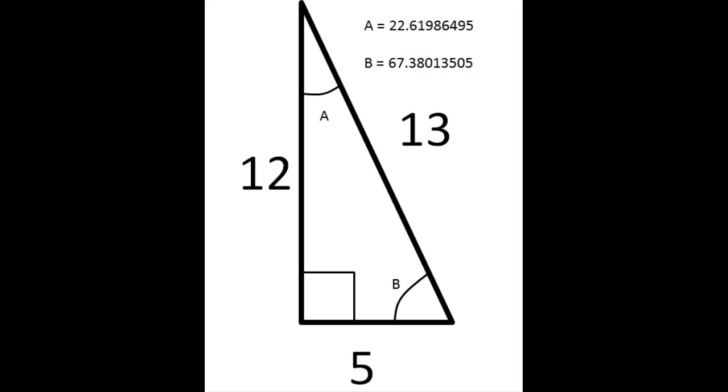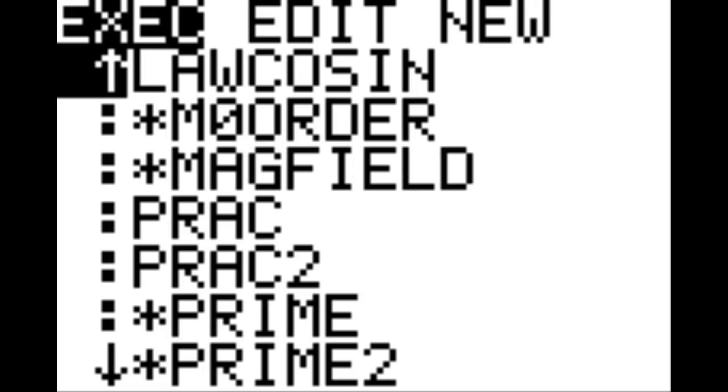Now that we're done writing this program, we can test it with a real triangle to see if it holds up. We're going to be using the triangle depicted below, which has sides 5, 12, and 13, and angles A and B as noted above. First, hit the program key, find the program law cosine, hit enter, hit enter one more time, and then enter once more.